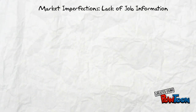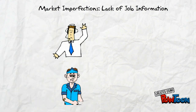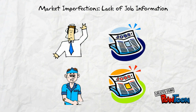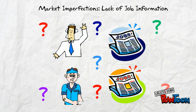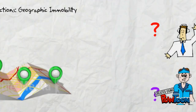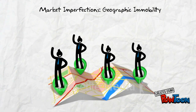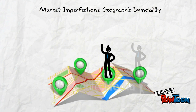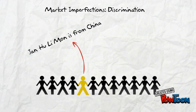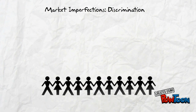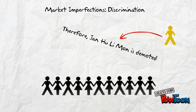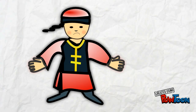Some persistent wage differentials result from market imperfections that hinder workers from moving from lower-paying to higher-paying jobs. For example, workers may be unaware of job opportunities and wage rates in other geographic areas. Many workers are also reluctant to move, as doing so would mean leaving friends, relatives, and associates, and incurring the costs of adjusting to a new job. This is Jan Hu Limon from China, currently working at Extra Cafe. When a new boss takes over and demotes Jan Hu Limon, that is a pure case of discrimination in the workplace.